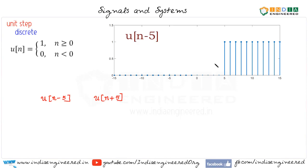This means the signal should shift left by 5 units. This is the plot of u(n+5).